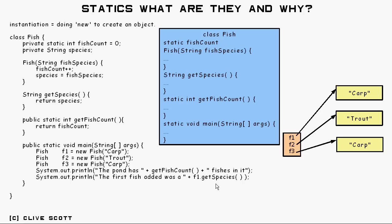You see the fish count is static - there's only one for all fish objects - but species is non-static. Each fish object you create has its own copy.